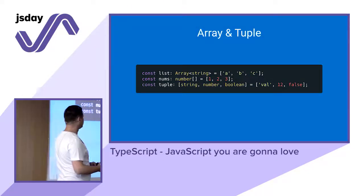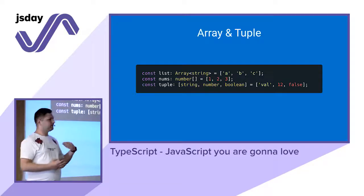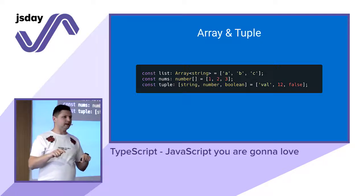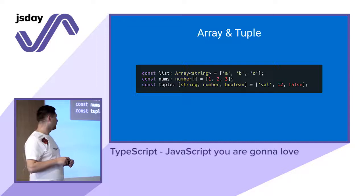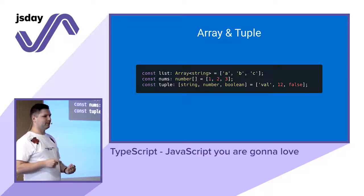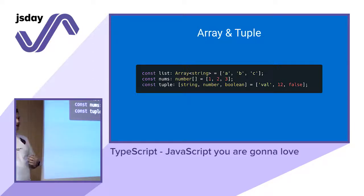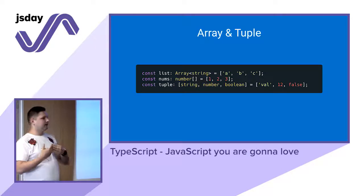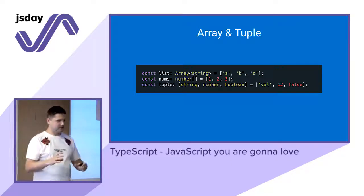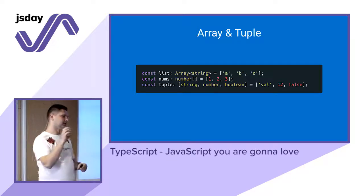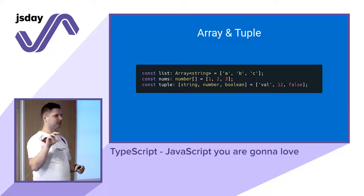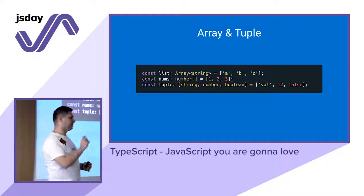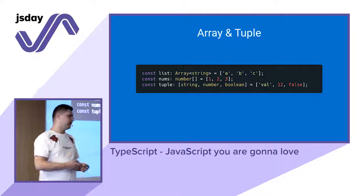For arrays, there are a few ways to declare them. First, write 'Array' explicitly with the item type inside a generic. The more widely used shorthand is writing the type followed by array literal notation, like 'number[]'. You can also specify a tuple — a list of fixed length with fixed types in a specific order. For example, a list of length three where the first value is string, second is number, and third is boolean.